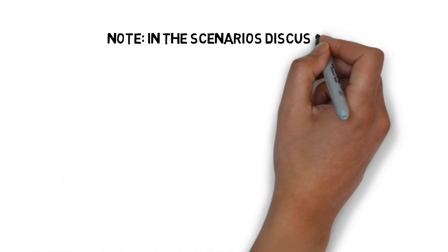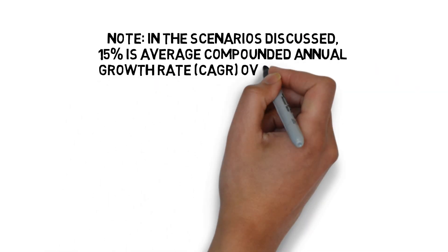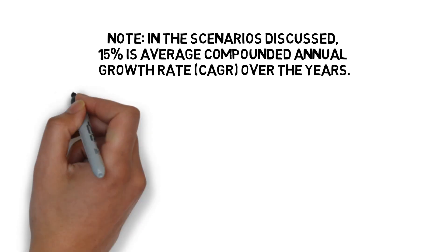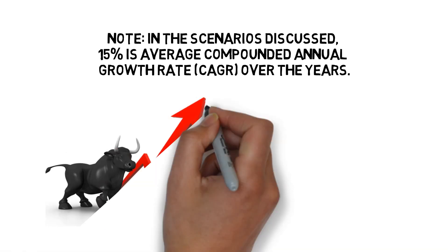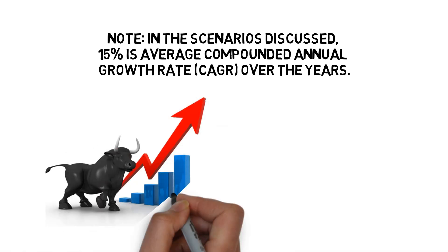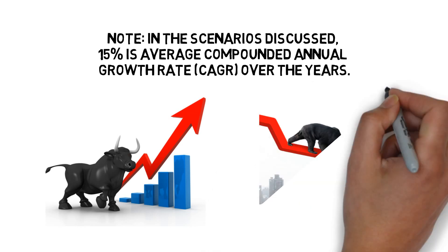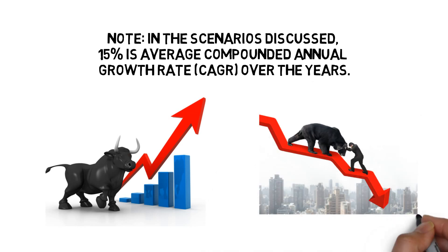Quick note: in the scenario discussed above, 15% is considered as the average compounded annual growth rate over the years. However, you must understand that it is just an average, as no market can give a consistent 15% return. In a bull market, the market can give as high as 30–40% return. On the other hand, in a bear market, the performance can be as low as minus 10–5%. Here, the 15% is taken as an average of the returns over the next 15–30 years.